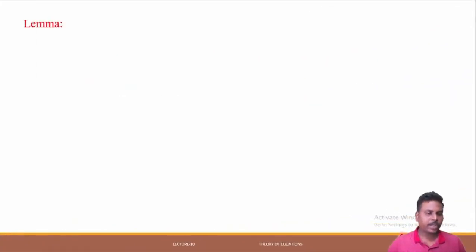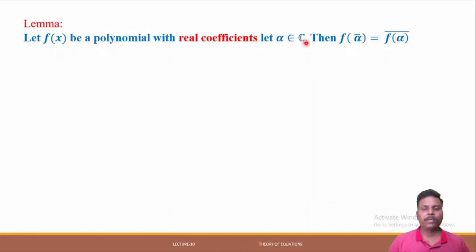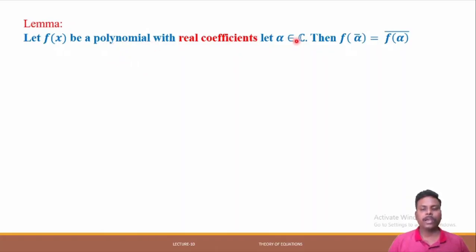We'll start this lecture with a lemma. Here is the statement: Let f(x) be a polynomial with real coefficients and let alpha be a complex number. Then f(ᾱ) is equal to f(α) bar — that is, substituting the conjugate of a complex number in the polynomial gives the same result as substituting alpha and then taking the conjugate.